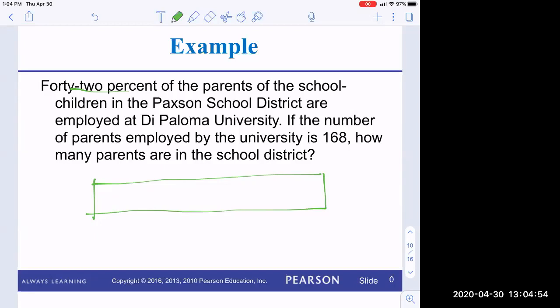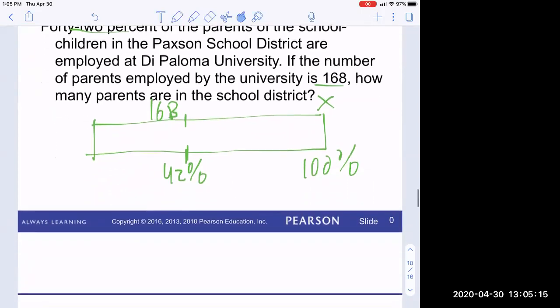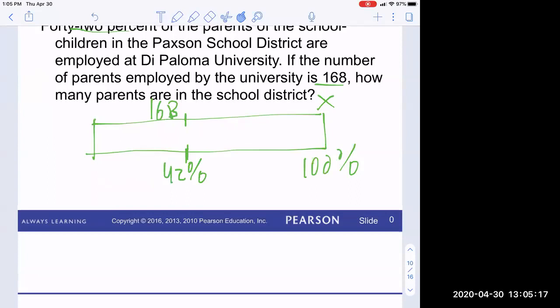Okay. 42% of the parents are employed out of a hundred. See, the number employed is 168. Oh, that's here. So X has to go there. There's only four things. So again, I've got it set up.